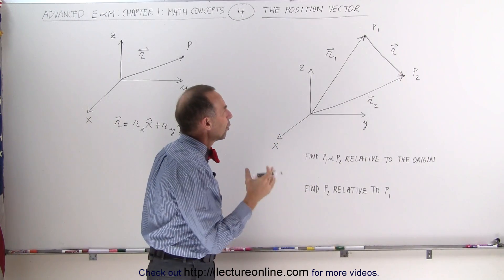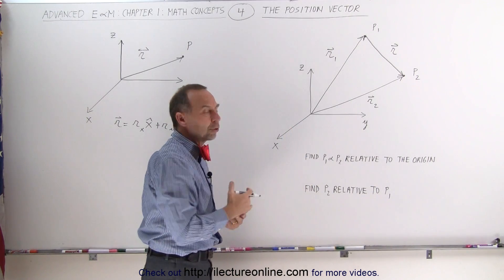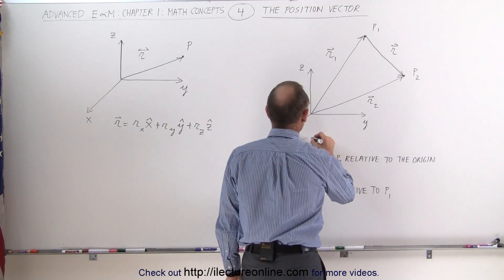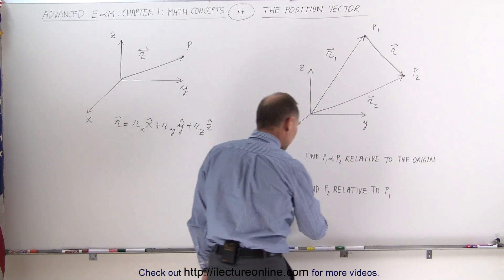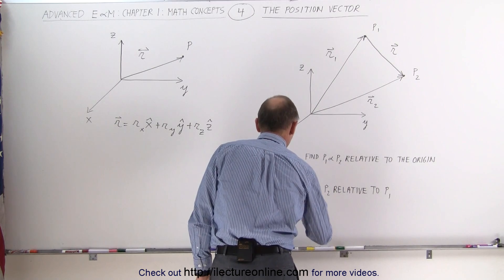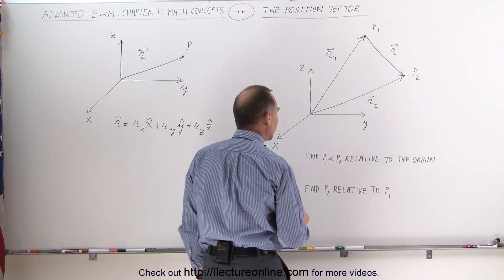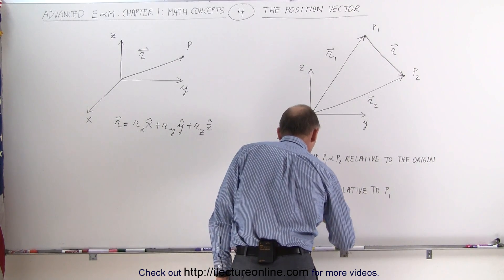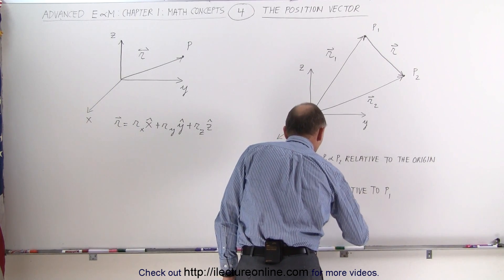How do we describe that vector relative to r1 and r2 position vectors? Well, it turns out that the r vector is equal to r sub 2 minus r sub 1.